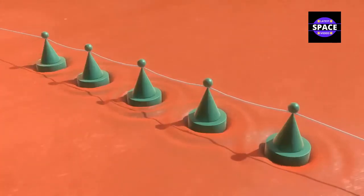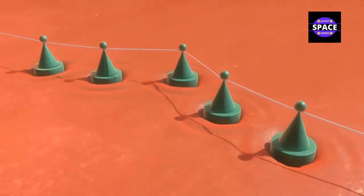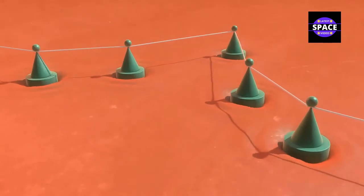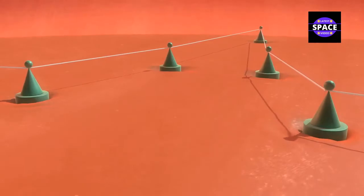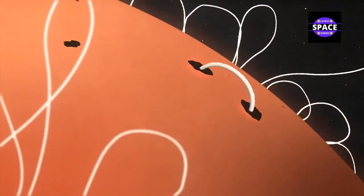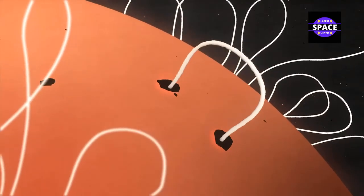As the Sun rotates, plasma around the equator moves faster than near the poles, causing the magnetic fields to become stretched, elongated and then twisted. Then kinks in the magnetic fields burst through the surface as sunspots larger than the size of Earth.